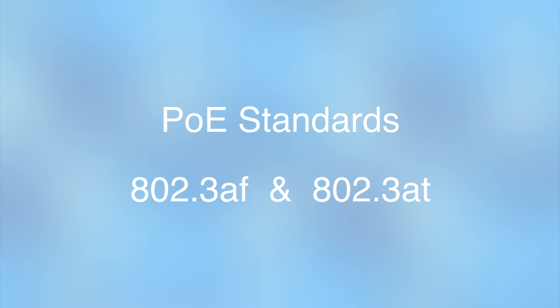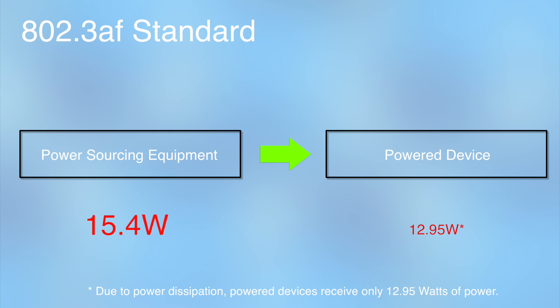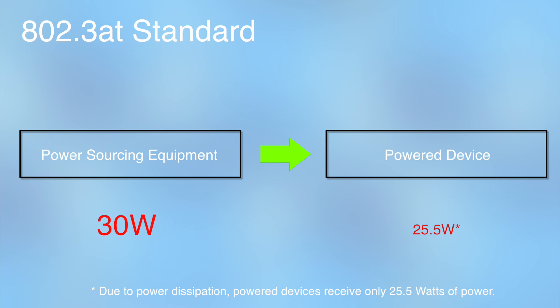There are currently two PoE standards. The 802.3AF standard supports 15.4 watts of power, and the higher powered 802.3AT standard supports 30 watts of power.